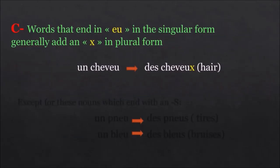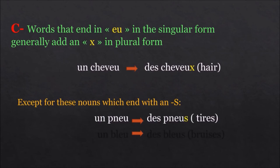Words that end in E-U in the singular form generally add an X in plural form. For example, un cheveu, des cheveux. Except for these nouns which end with an S. Un pneu, des pneus. Un bleu, des bleus.